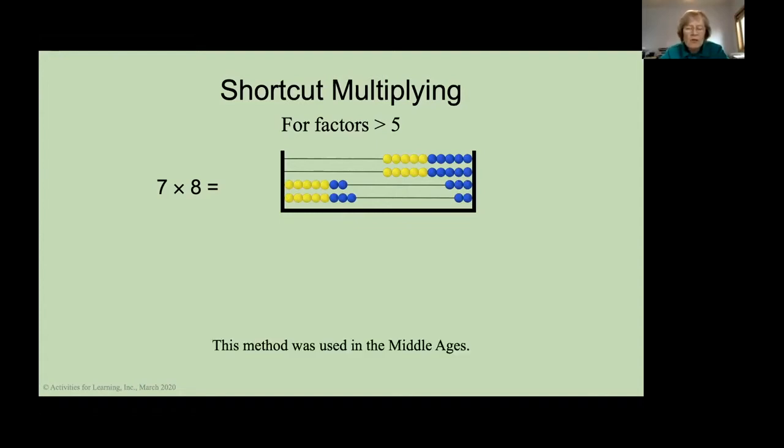I am using the bottom two wires of the Abacus. Put 7 on the second wire from the bottom and 8 on the last wire. And this method was used in the Middle Ages, so it is not that new. Now, to find the tens, notice the number of dark colored beads, the blue ones. And we can see there is 2 and 3 or 5. So, 20 and 30 make 50. That is our tens. To find our ones, we look on the right side and multiply the 3 times the 2. And we get 6. So, 7 times 8 is 50 plus 6 or 56. That's cool, right?